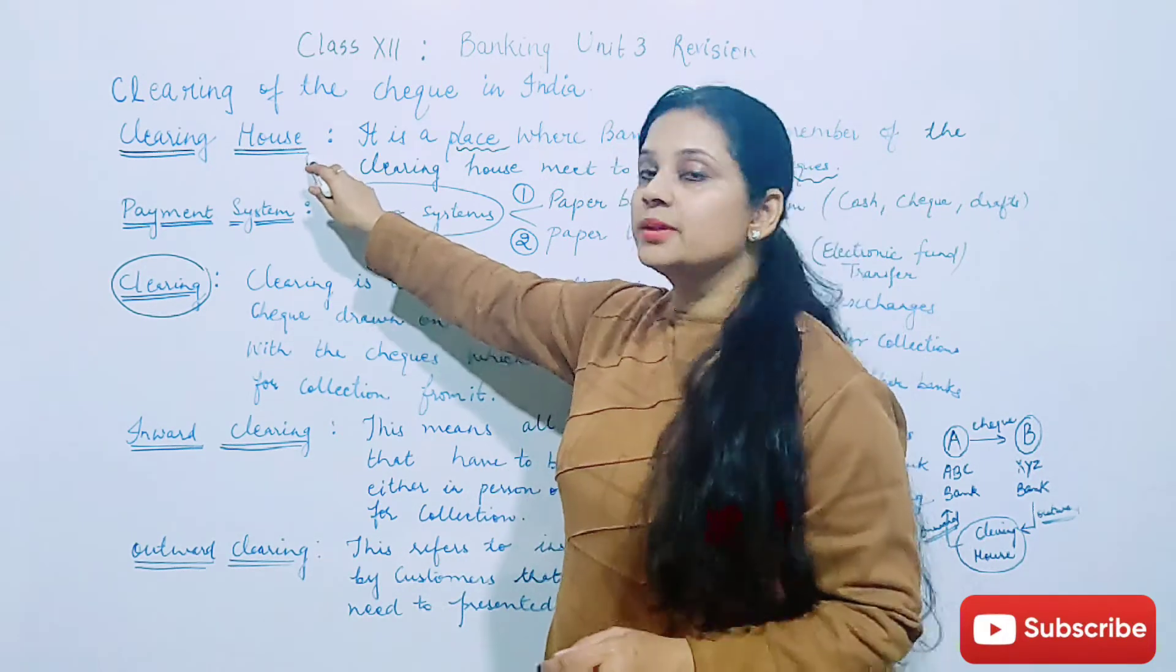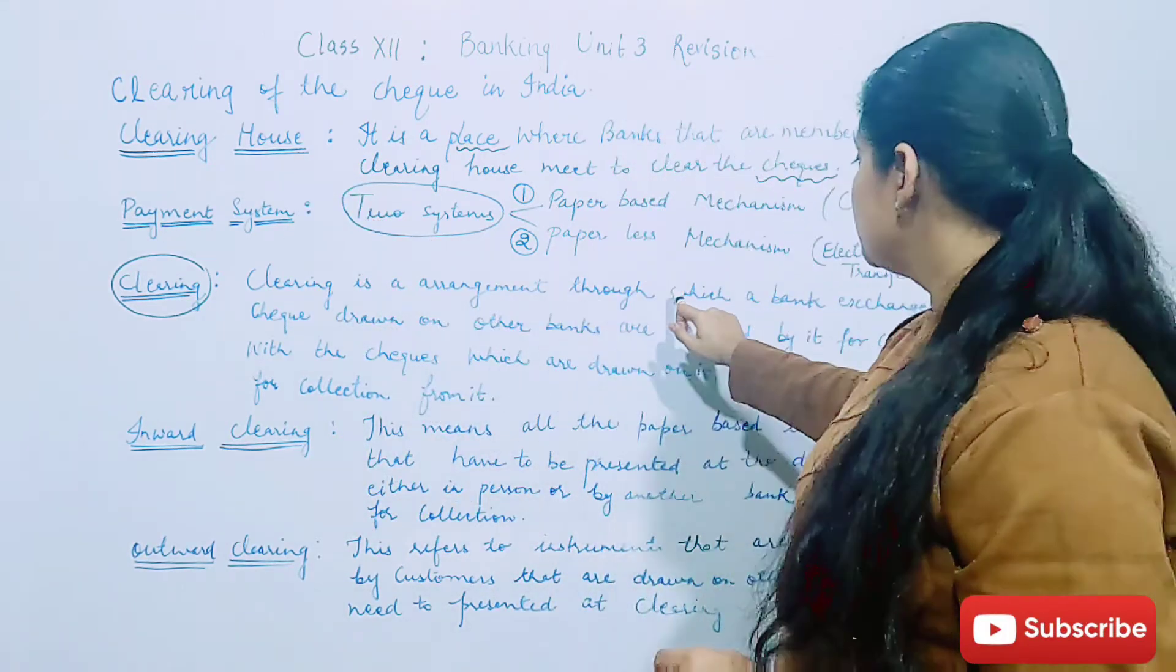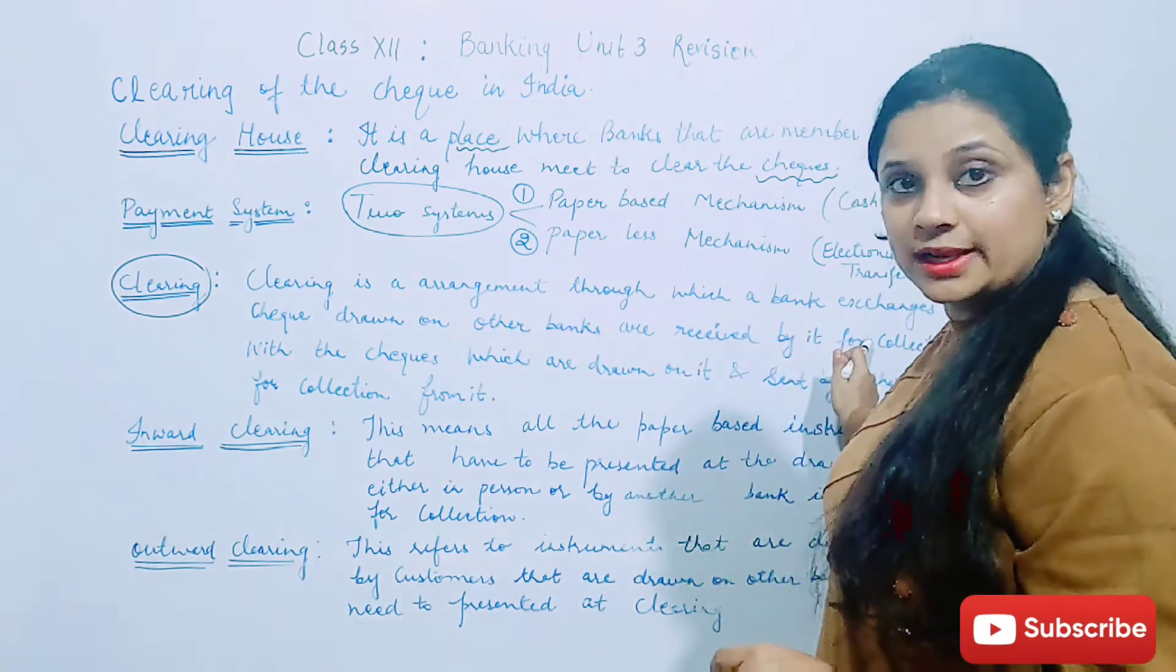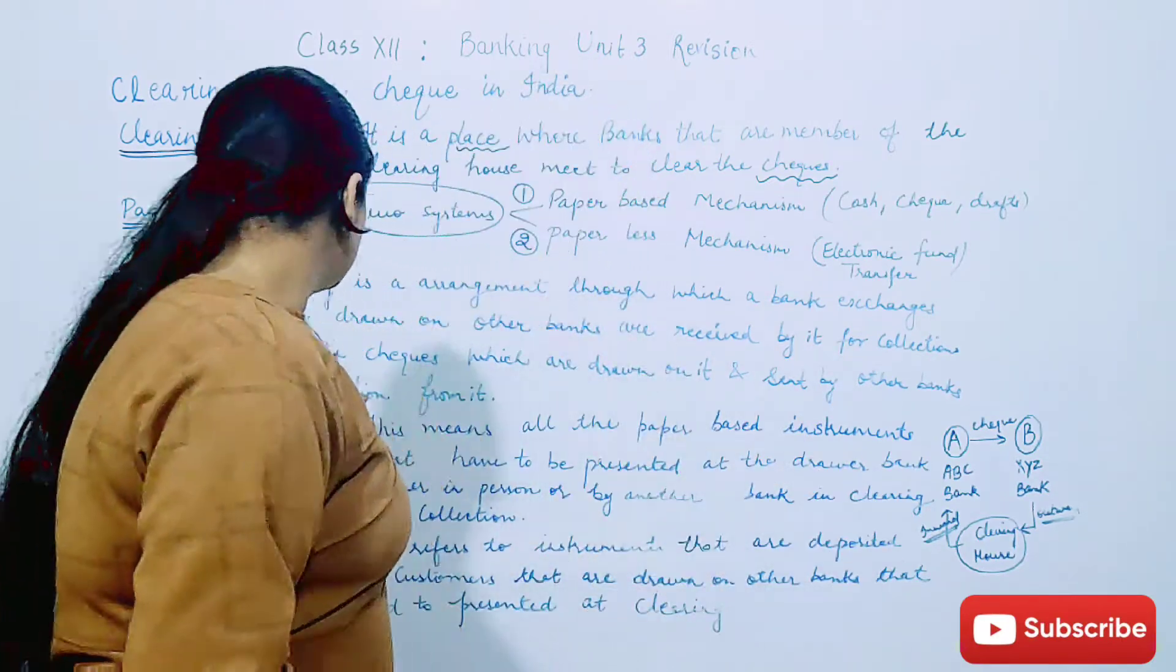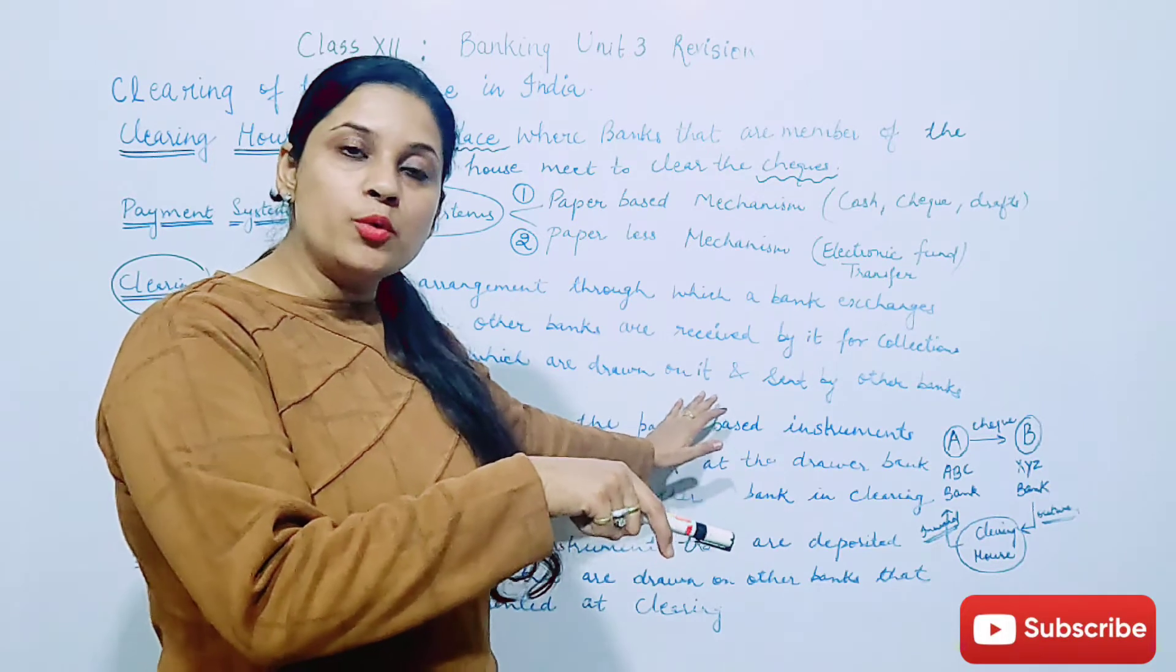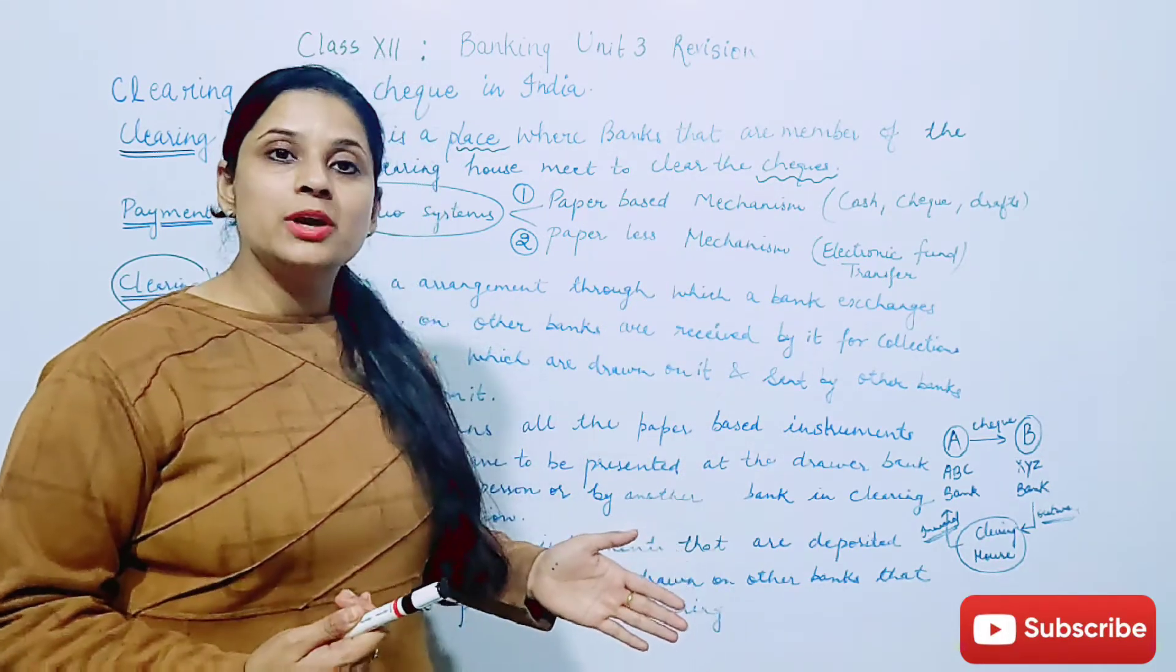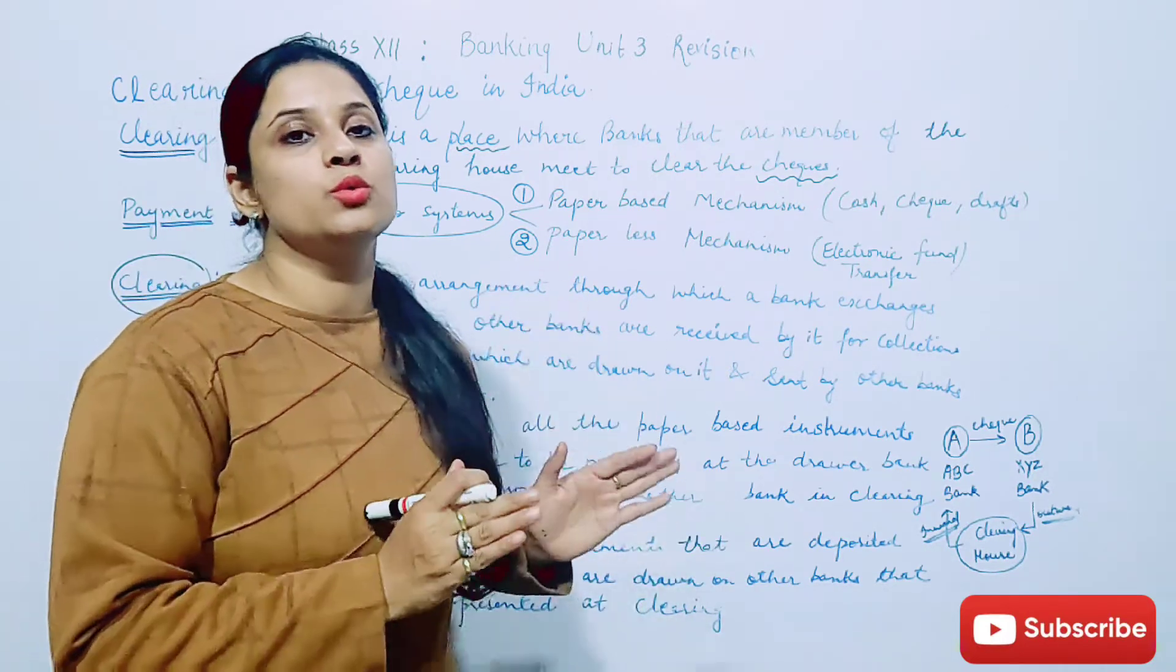Aur usko kaun support karta hai? Clearing house support karta hai. So clearing is an arrangement through which a bank exchange checks received by it for collection with the checks which are drawn on it. Chahe us bank ke naam pe drawn hoon, chahe usne kisi aur bank ke receive kiye hoon for clearing. That arrangement is known as clearing.